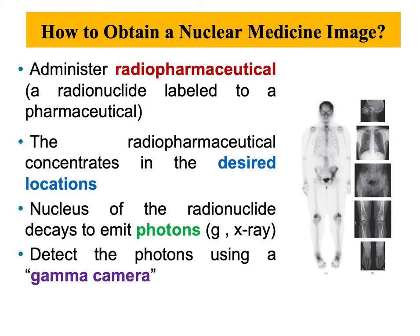We have two categories: one is planar imaging and the second category is emission computed tomography, which consists of SPECT and PET. SPECT is the single photon emission computed tomography and PET refers to the positron emission tomography.